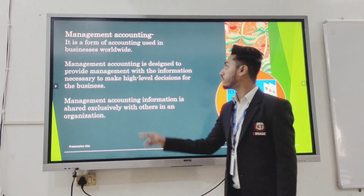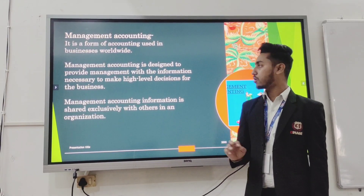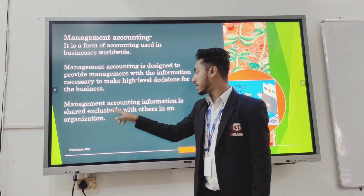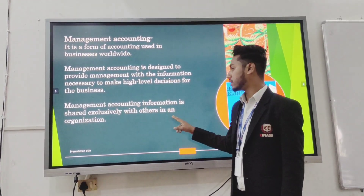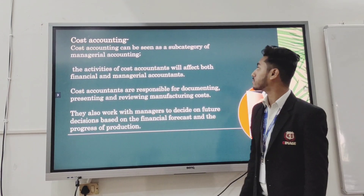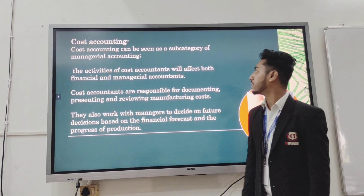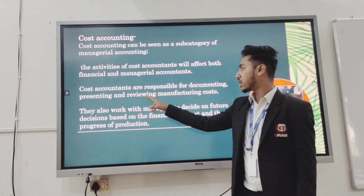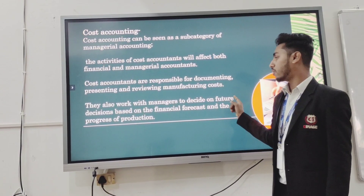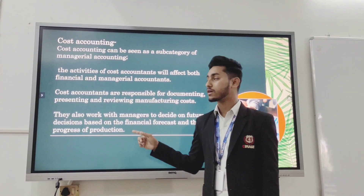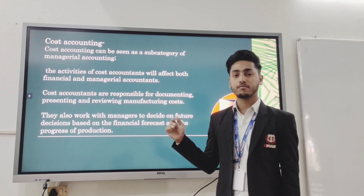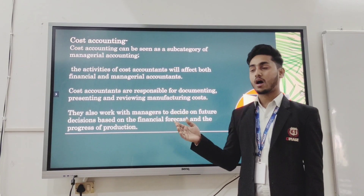The second type is management accounting — a form of accounting used in businesses worldwide. Management accounting is designed to provide management with the information necessary to make high-level decisions for the business, and this information is shared exclusively within the organization. The third type is cost accounting, which can be seen as a sub-category of managerial accounting. Cost accountants are responsible for documenting, presenting, and analyzing manufacturing costs. They work with managers to make further decisions based on financial performance and the progress of production, helping determine how much more needs to be produced.